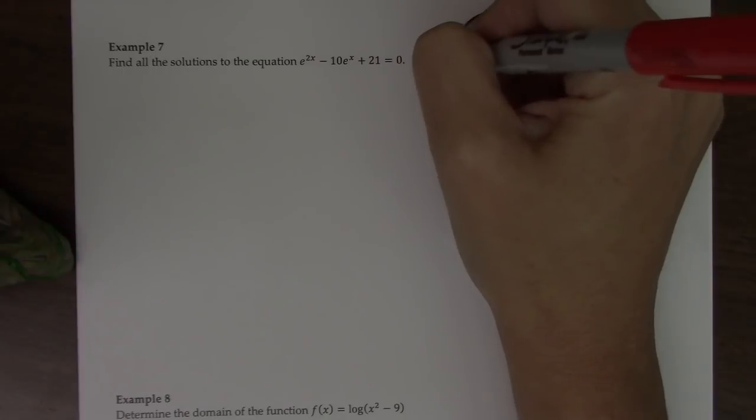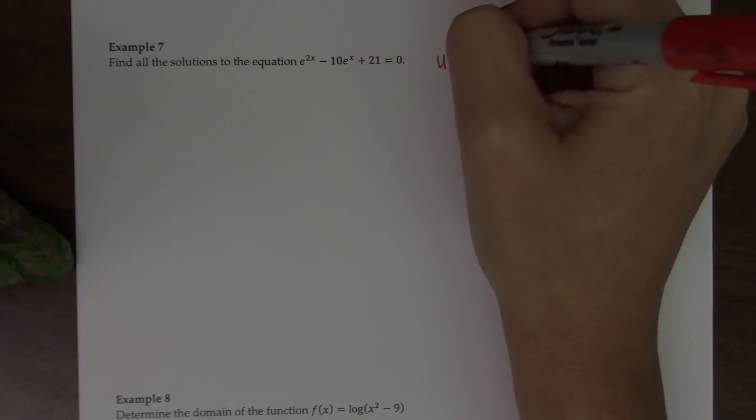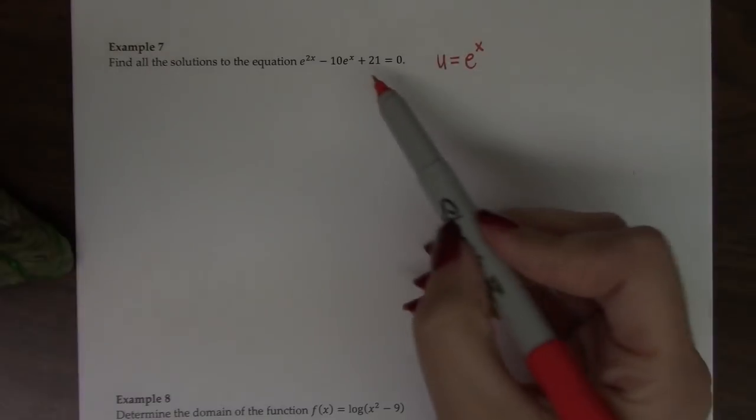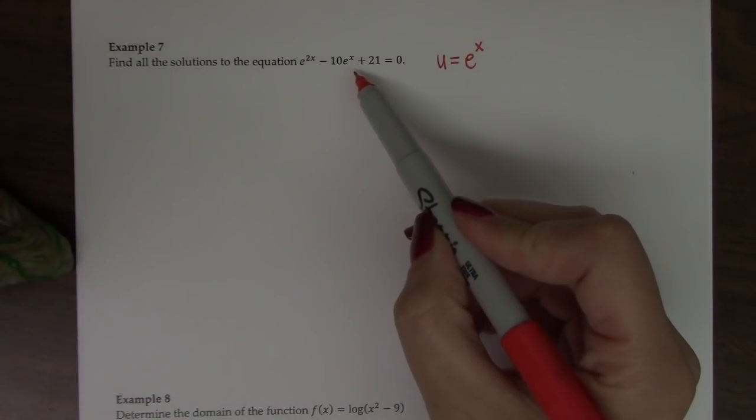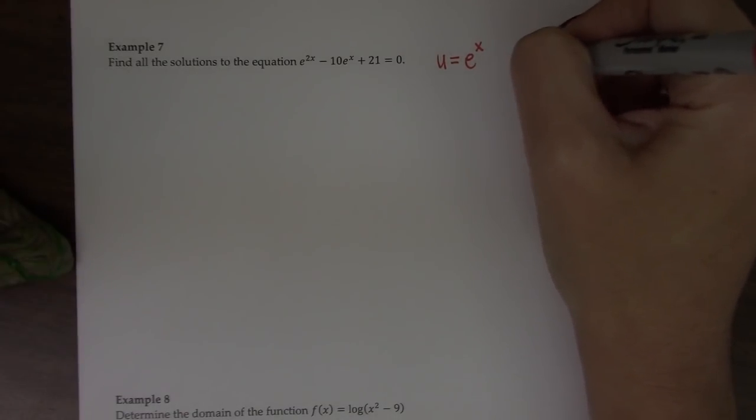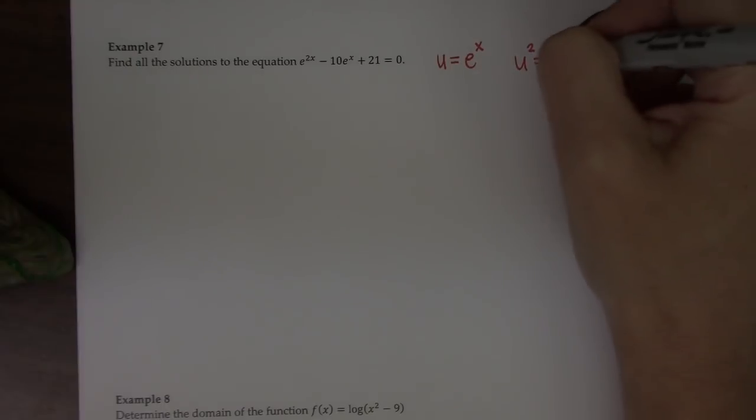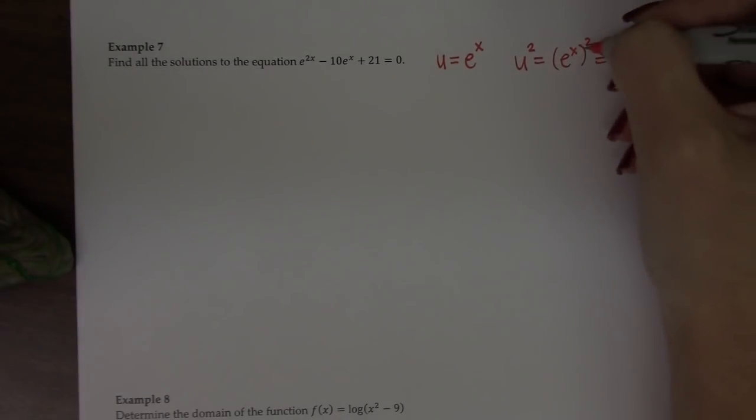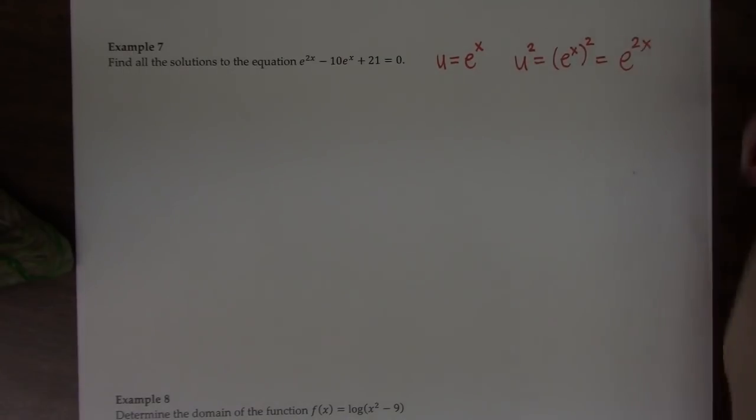I think this might be a quadratic, so I'm going to let u be e to the x. So that means that would be a u right there. And if this is a quadratic, then that better be u squared. So let's square both sides of this equation and see if that's true. So e to the x squared, you multiply the exponents together and you get e to the 2x.